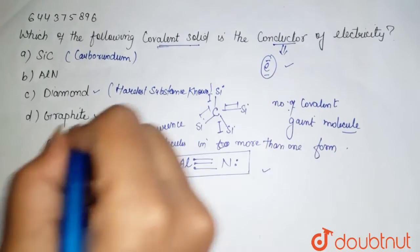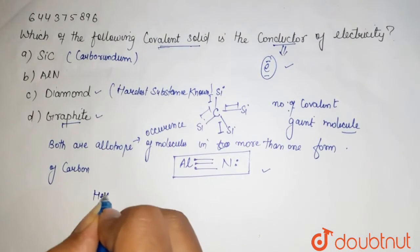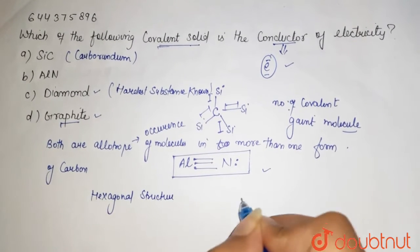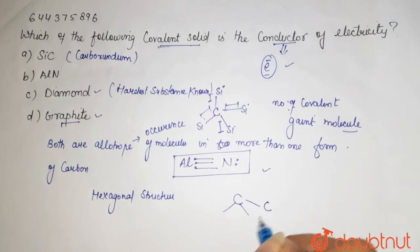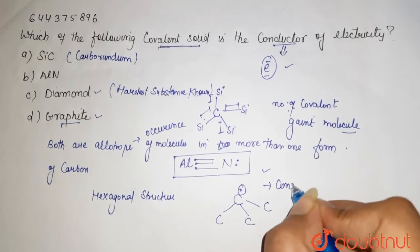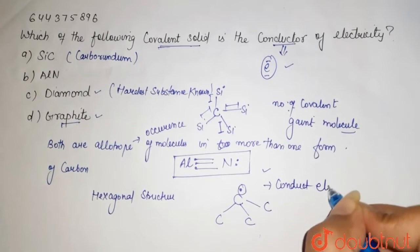And this graphite, it forms hexagonal structure. Here this is your carbon, this carbon and this carbon. Here it is the free electron which are able to conduct electricity.